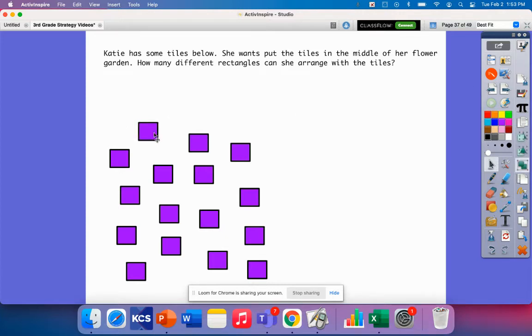Okay, so we're going to take these smaller tiles. What we're going to do is we're going to make a larger rectangle with them. But we need to know how many we have first. So I have 2, 4, 6, 8, 10, 12, 14. I have 16 tiles.